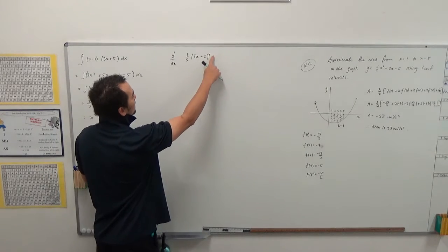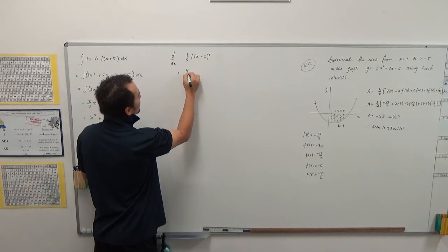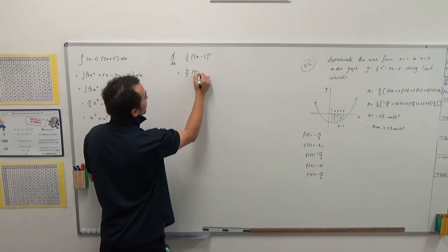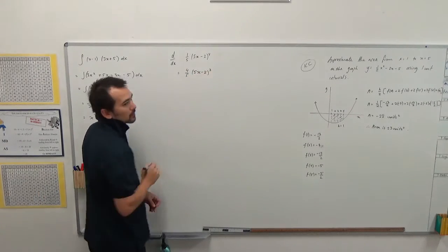So we're deriving the outside, so we're going to bring that four down, and what happens to the power? It goes to three, right, we drop the power.